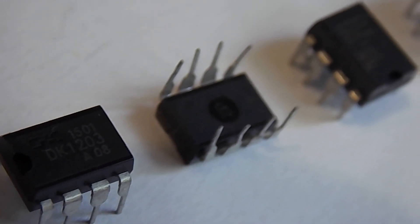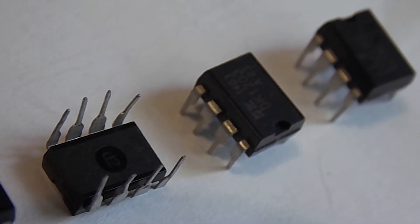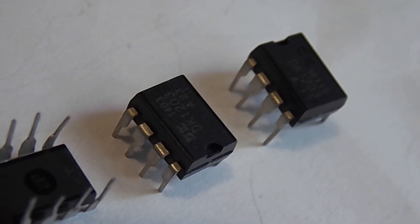Also, it does not require additional winding on the transformer to power it. To do this, the microcircuit provides a self-powered circuit. If a weak load is connected at the output of the power supply, the microcircuit automatically switches to the pulse skipping mode. And in standby mode, the power supply consumes less than 0.3 watts.